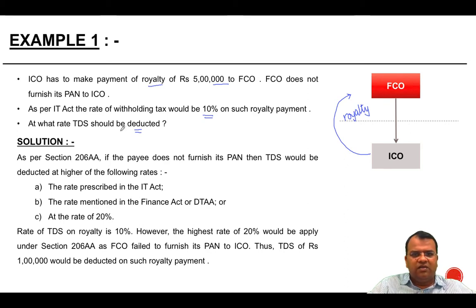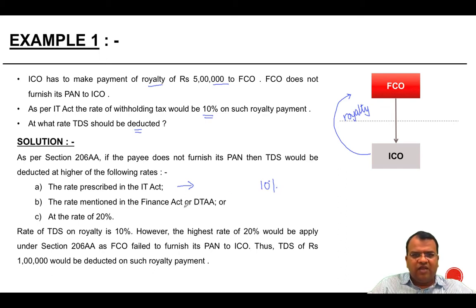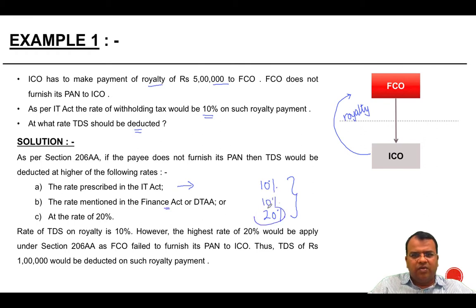We don't know the treaty rate, but we know that if the PAN is not given, the rate will be the higher of: the rate prescribed under the IT Act, which is 10%; the rate mentioned in the Finance Act or DTAA; or 20%. So which is the highest of these three? If the Finance Act rate is also 10%, then the highest is 20%, so TDS will be deducted at 20%. On Rs. 5 lakh at 20%, TDS would be Rs. 1 lakh.